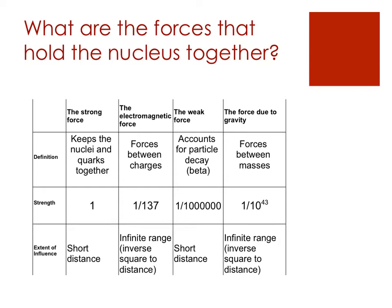Now let's talk about the weak force. This is going to be happening typically in the nucleus. It accounts for beta decay — if you haven't done 7.3 particle physics yet, go back and check when you do. We're talking about the exchange bosons: the Z, W+, and W− bosons. It's the only force that involves a change in charge and also a change in quark flavor.